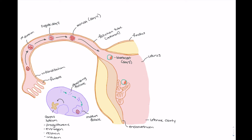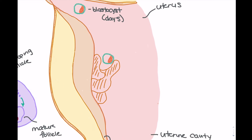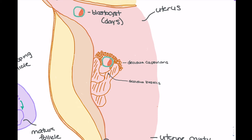As the blastocyst makes contact with the endometrium, the process of implantation begins. Part of this process involves growth of the endometrium to encapsulate the blastocyst. Progesterone and estrogen stimulate this growth, and as the endometrial layer grows over the blastocyst we have what's called the decidua capsularis forming. The layer of endometrium below the blastocyst is the decidua basalis, and both layers play an important role in the fetal membranes that develop over time. We also begin to see complex interactions between the trophoblast — the outer layer of the blastocyst — and the maternal spiral arteries.